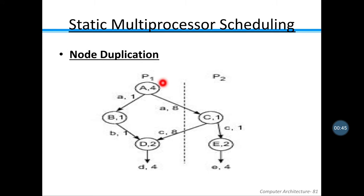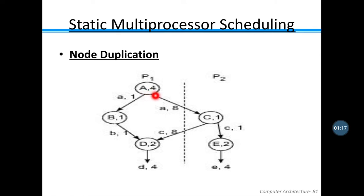Before understanding node duplication, we will take an example. Here we have two processors P1 and P2, with nodes A, B, D, C, and E. Processor P1 is executing nodes A, B, and D, and processor P2 is executing C and E. Node A takes four clock cycles, B takes one clock cycle, D takes two clock cycles, C takes one, and E takes two.